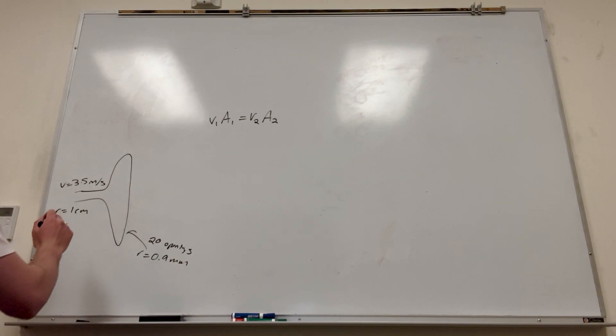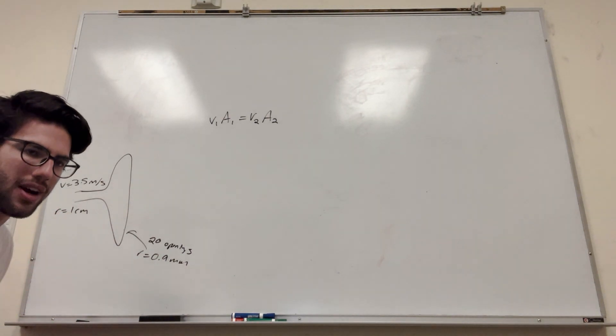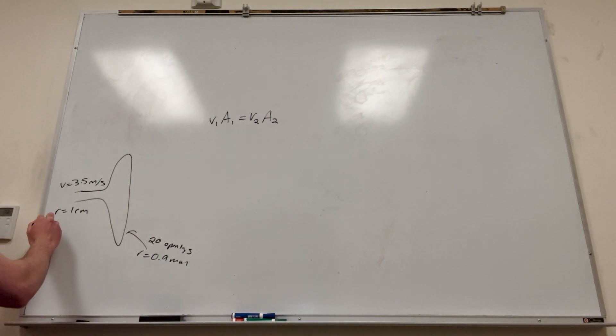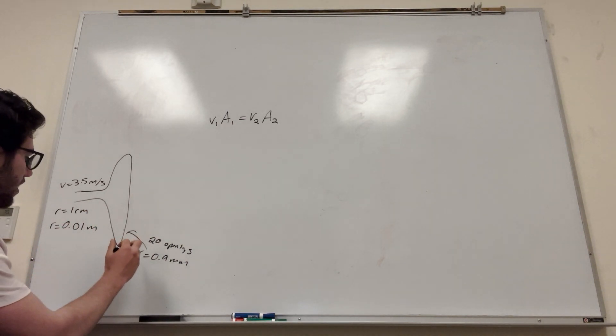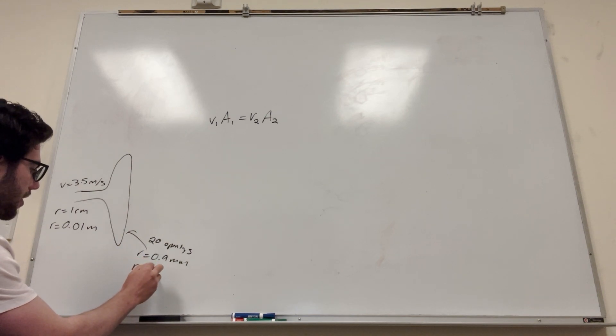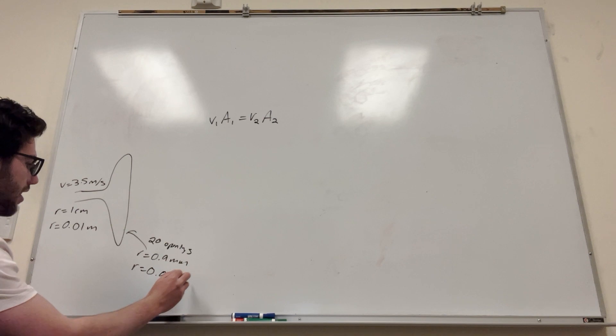So let's start here. Let's convert everything to meters, because we want everything in meters. So radius here is equal to 0.01 meter. If you do that conversion correctly. And then this radius is 0.0009, I'm pretty sure. 1, 2, 3, yeah, that's right. Meters.